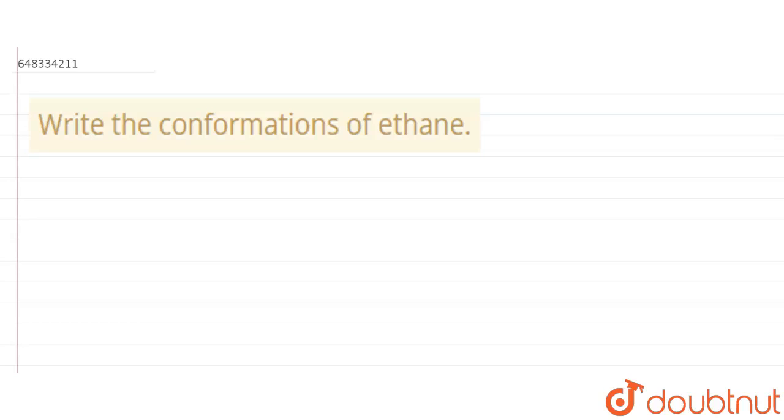The question says write the confirmations of ethane. So ethane is an alkane which is having the general formula as C2H6. Now it looks like there are two carbons and three hydrogens bonded with it. So it is asked that we need to give the conformations of ethane.